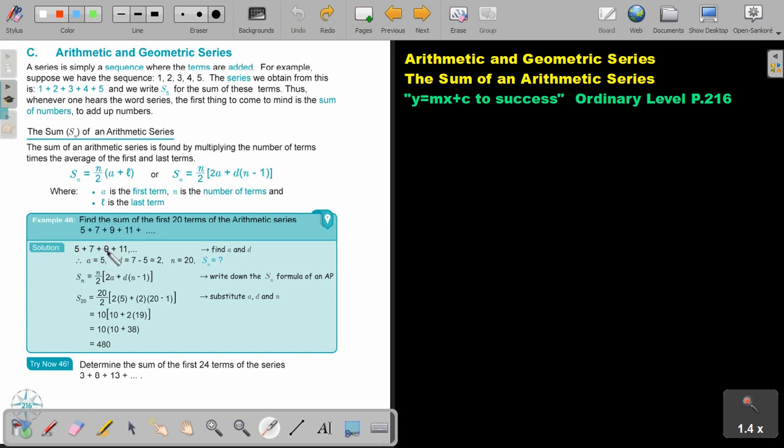Let's look at this example. Find the sum of the first 20 terms of the arithmetic series 5 plus 7 plus 9 plus 11. A is 5, D, now they tell you it's an AP, so you can just say the front minus the back is 2, N is 20, they want 20 terms, and SN, I want the sum of the 20 terms and it's basically just substitution. I fill in everything, I work it out and I get my answer. Very important that you just memorize these two formulas. I want you to stop the video and do try now 46. You can continue the video as soon as you are finished.